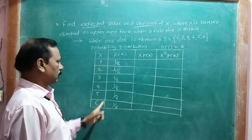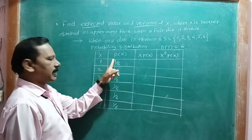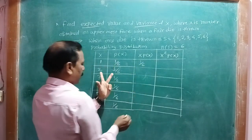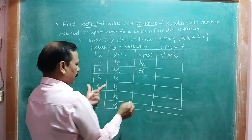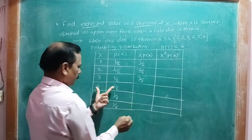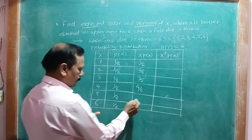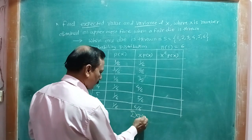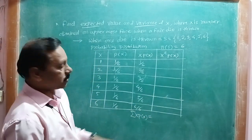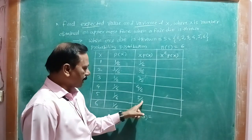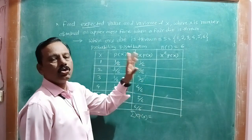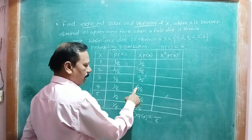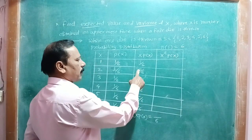Setting up the table of x and P(x): P(x) = 1/6 for each value. The product x·P(x) gives: 1×(1/6) = 1/6, 2×(1/6) = 2/6, 3×(1/6) = 3/6, 4×(1/6) = 4/6, 5×(1/6) = 5/6, 6×(1/6) = 6/6. The expected value E(X) = summation of x·P(x).